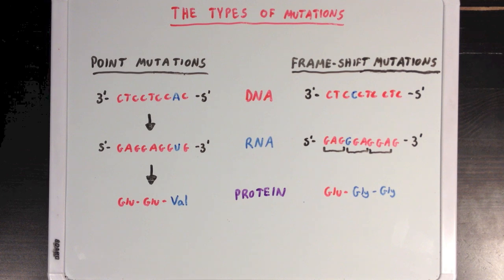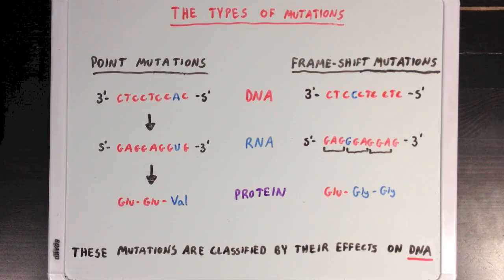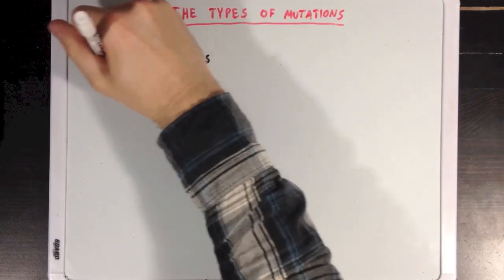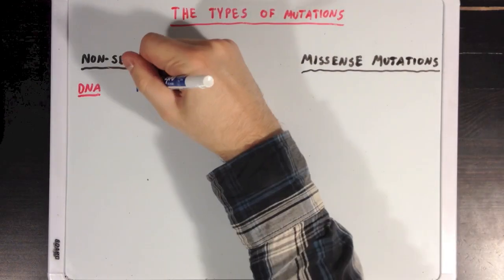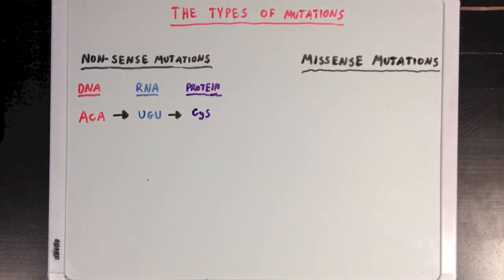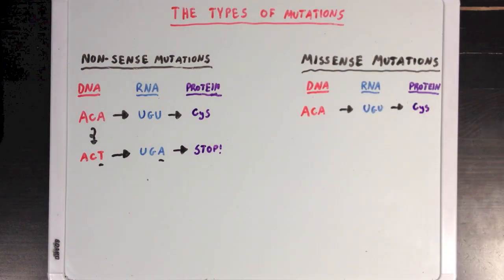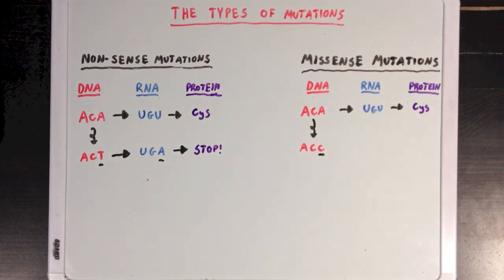It's important to recognize that both of these mutations are classified and named for how they affect the cell's DNA structure, and aren't really named for how they affect the resulting protein. Our next types of mutations are nonsense mutations and missense mutations. Let's say we have a DNA sequence that normally generates RNA and codes for a cysteine amino acid. A nonsense mutation is any genetic mutation that leads to the RNA sequence becoming a stop codon instead. Missense mutations are a little different — they're any genetic mutation that changes an amino acid from one to another. In this example, our mutation is changing the resulting amino acid from a cysteine to a tryptophan.